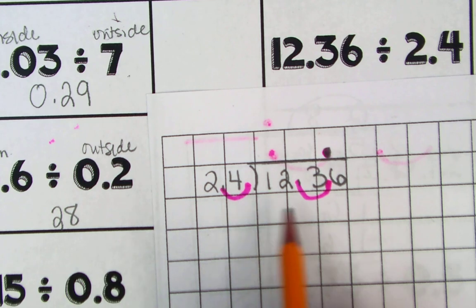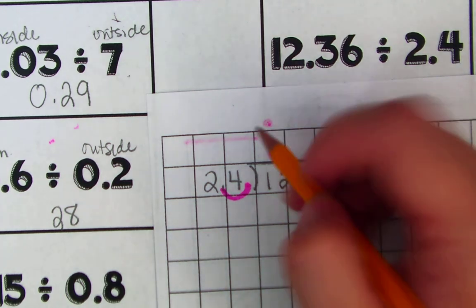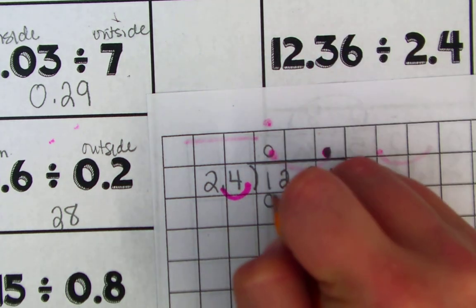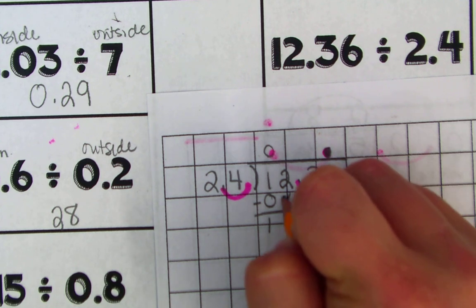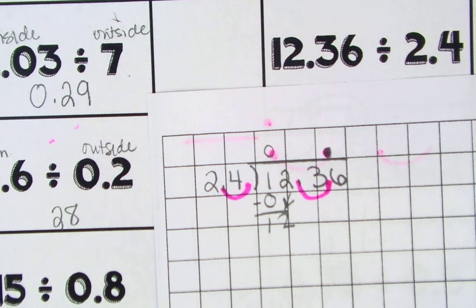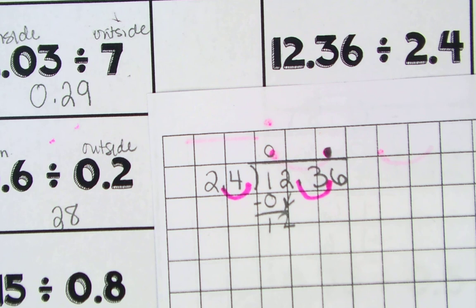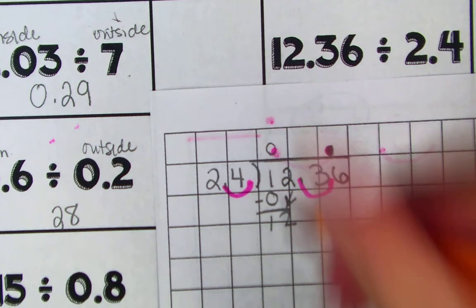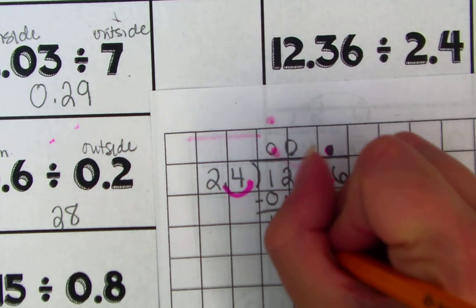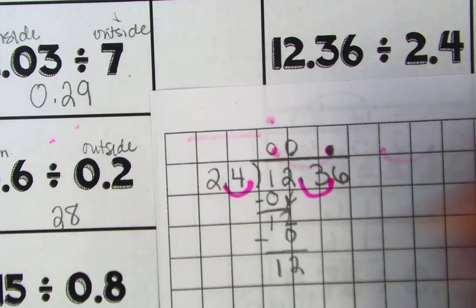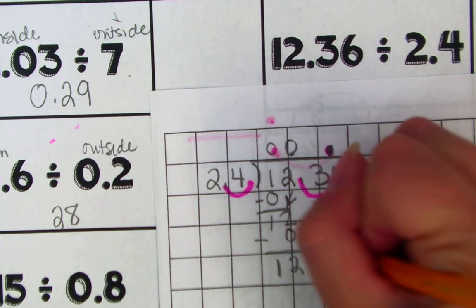Let's do 24 goes into 0. 1, 0 times. Subtract. You get 1. Bring down your 2. 24 goes into 12, 0 times. Subtract. You get 12. Bring down your 3.